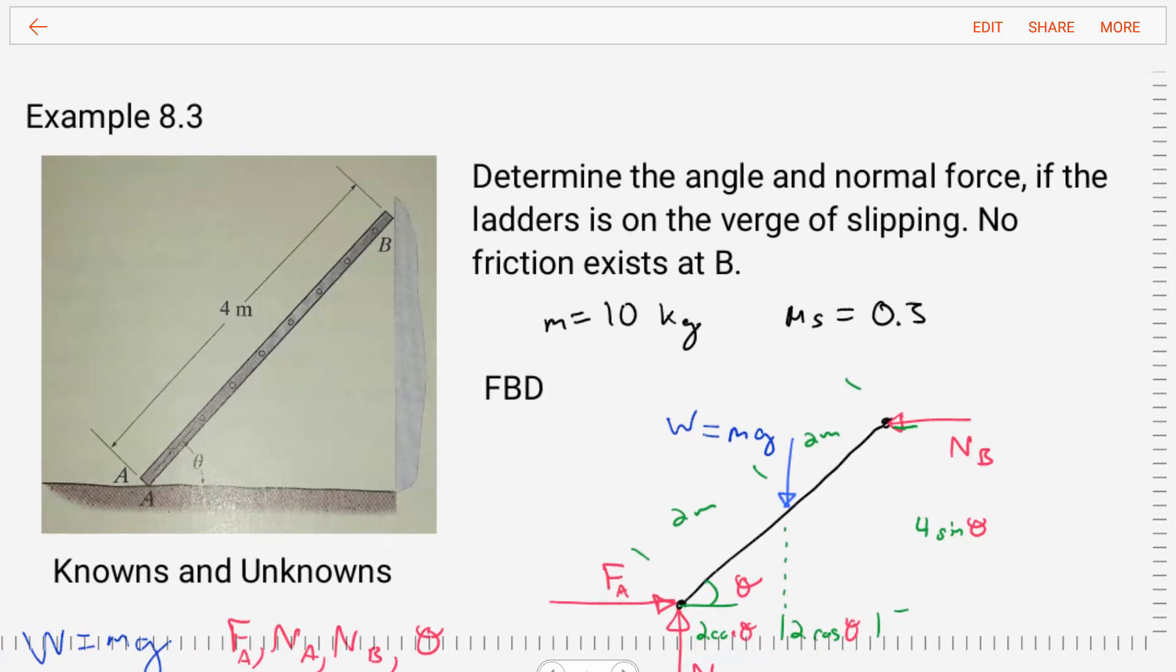In this example, we're asked to determine the angle and normal force if the ladder is on the verge of slipping. And we're told that no friction exists at point B. So we need to find the angle and the normal force if the ladder is on the verge of slipping.